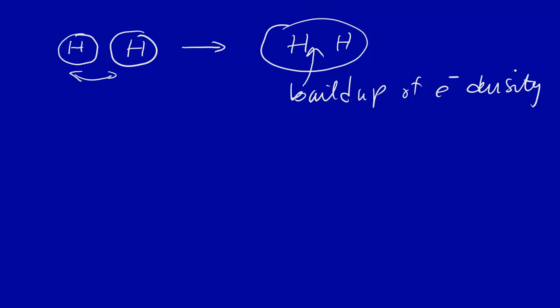Well, that's a useful concept. However, if we actually look at electron density throughout a molecule, we find that the bond actually represents a dip — usually it represents a dip in electron density.